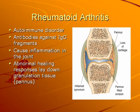On your exam, definitely know the difference between rheumatoid arthritis and osteoarthritis. Rheumatoid arthritis is an autoimmune disorder. The body develops antibodies against immunoglobulin G fragments, and that causes macrophages and neutrophils to release enzymes that cause damage to the joint cartilage. It usually affects the small joints first, like the fingers, wrists, knees, and feet.